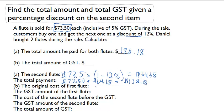Now let's look at part B. The original cost for the first flute had to be $73.50 divided by 1 plus 5%, where the 5% was the GST inclusive amount given in the first sentence. That's going to give us the original cost of $70.00. The GST amount for the first flute had to be $73.50 minus $70.00, and that gives us $3.50.